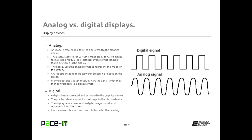So what's a digital display? Well, the digital image is created and delivered to the graphics device. The graphics device then transmits the image in a digital format to your digital display and the image is placed on the screen. Digital display devices do tend to have faster capabilities — they work better than going from digital to analog back to digital. And it is the newer standard. That's the difference between analog and digital.